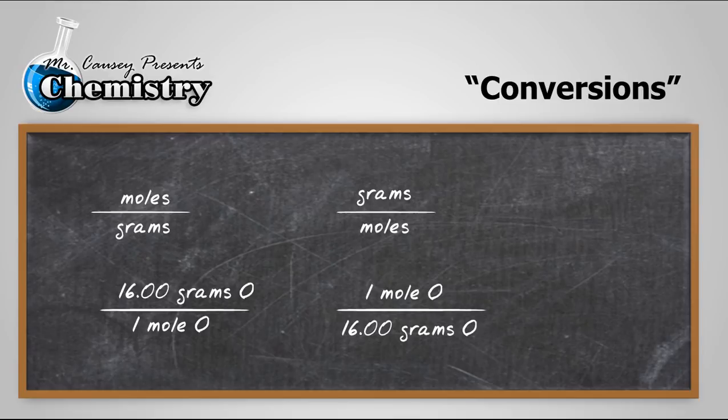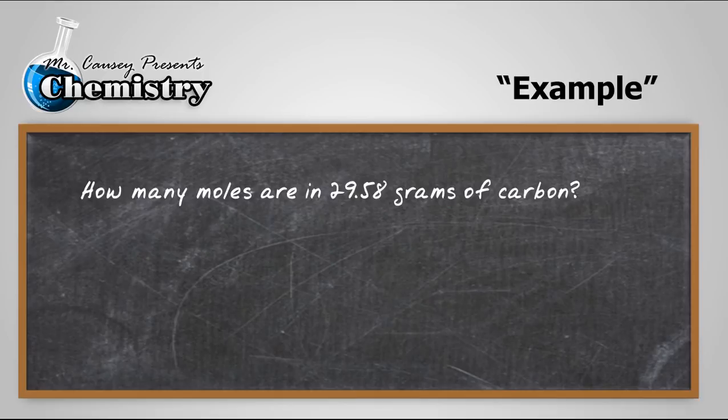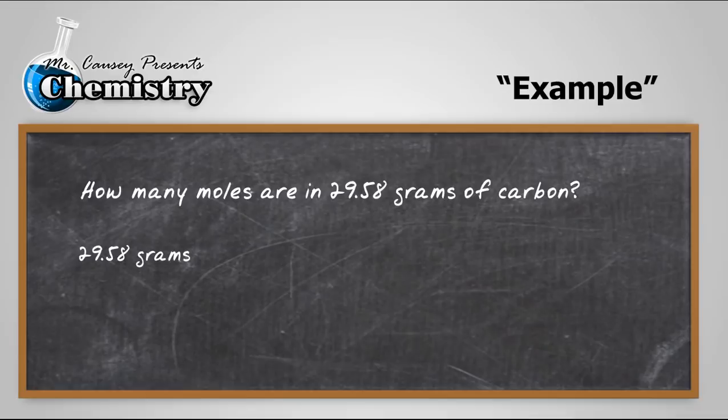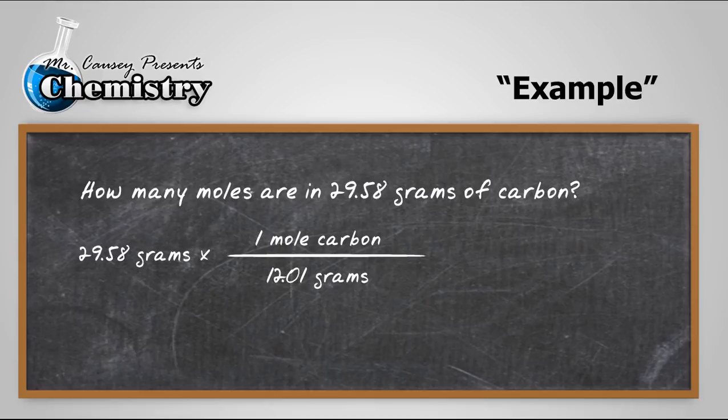Here's an example. How many moles are in 29.58 grams of carbon? Well, 29.58 grams. I know that I want to take the grams, I want to change it to moles. Therefore, I'm going to use molar mass. Go to my periodic table and there's carbon, which is going to be 12.01 per mole. And I've got it set up so that my grams cancel out. Put it in and plug and chug. And I get 2.463 moles of carbon.